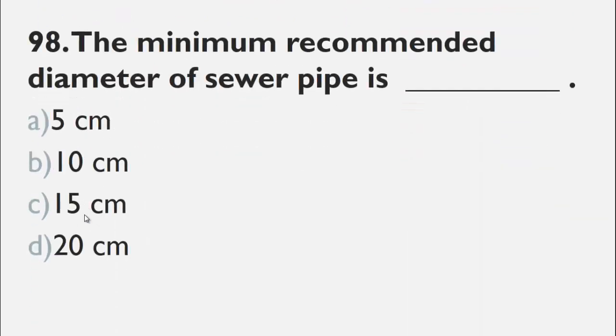MCQs number 98 is, the minimum recommended diameter of sewer pipe is a 5 cm, b 10 cm, c 15 cm, d 20 cm. The right choice for this question is c 15 cm.